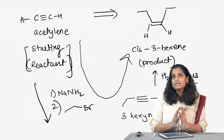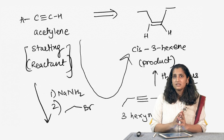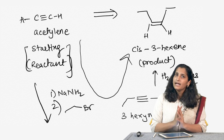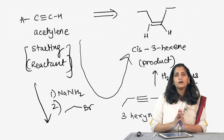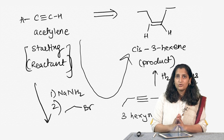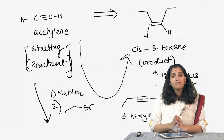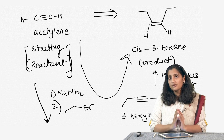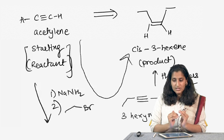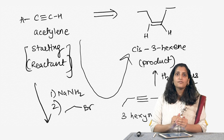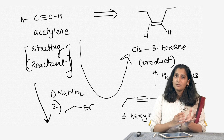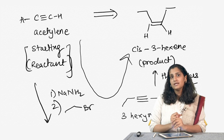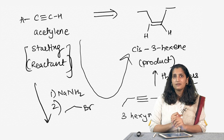We have seen one example of retrosynthesis. Let us now look at more examples in the tutorial. With this, I want to conclude the chapter on reactions of alkynes and start with substitution and elimination reactions in the coming week. Thank you.